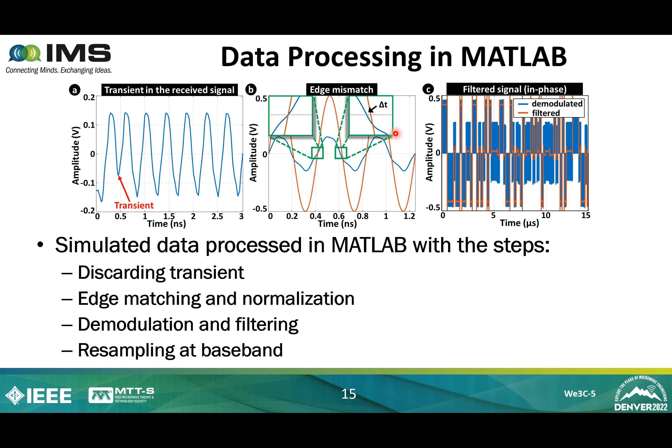Then the signals are demodulated and filtered using a low-pass filter. After filtering, the previously high data rate required in the RF domain is no longer needed. Hence, the signals are resampled at baseband. Now let's talk about some results.